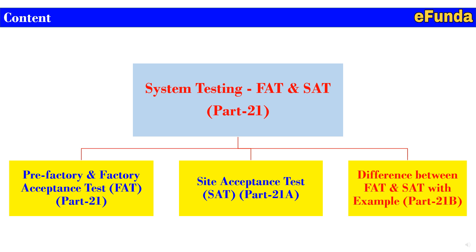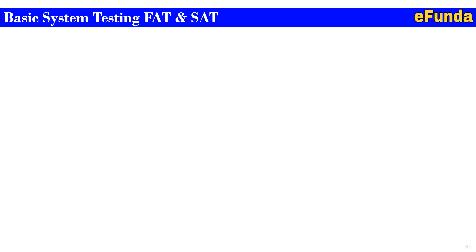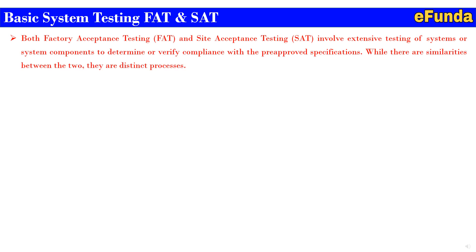Pre-factory and factory acceptance tests — FAT Part 21 — already published on our channel. Site acceptance test — SAT Part 21A — is already published on our channel. The last video of this series is the difference between FAT and SAT with example, Part 21B. Both factory acceptance testing (FAT) and site acceptance testing (SAT) involve extensive testing of the system or system components to determine or verify compliance with pre-approved specifications provided by the client.